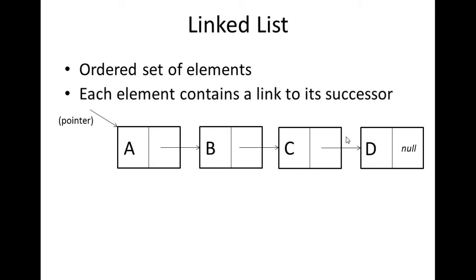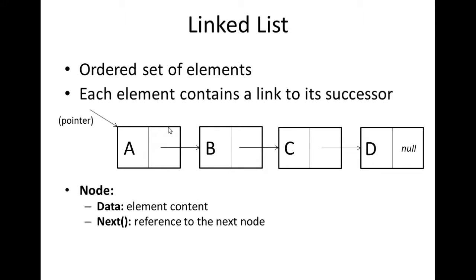This linked list consists of four elements: A, B, C, and D. A pointer is something that's used to point to the next element within a linked list. Every element in a linked list is called a node.